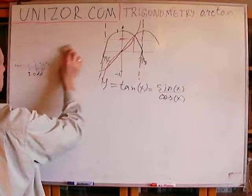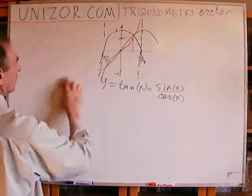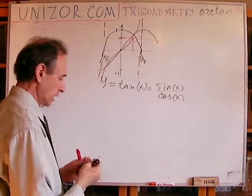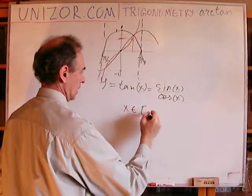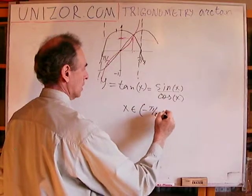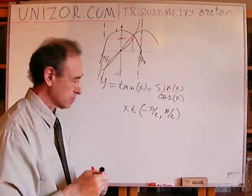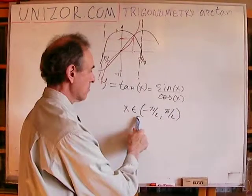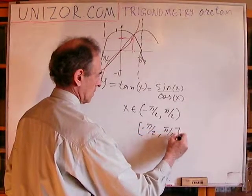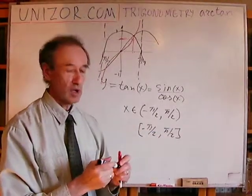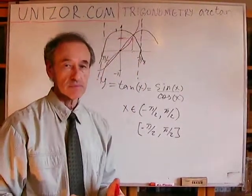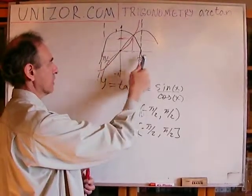And we are left with the function which we can call new tangent or whatever, which is defined only for interval from -π/2 to π/2. I don't remember if I mentioned it before, but whenever I'm using parenthesis it means the boundaries are not included. Whenever I'm using square brackets, that means the boundaries -π/2 and π/2 are included. In this case we cannot include boundaries because that's where we have asymptotes.